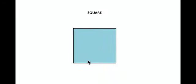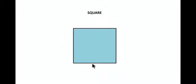Next, we have a square. A square is a four-sided figure with all four sides equal, and the four angles formed by these four sides are each 90 degrees. So if you have 90-degree angles and all four sides equal, then it's called a square.